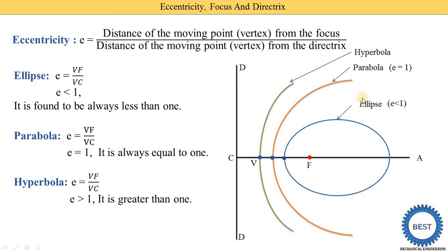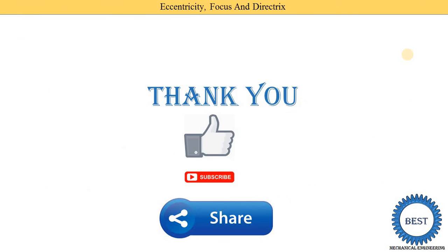You can easily remember this: the 'less than' symbol looks like the letter E, with a horizontal line — so for ellipse, eccentricity is less than 1. For parabola it is equal to 1. For hyperbola it is greater than 1. Thank you for watching this video. If you learned something, please like the video and subscribe to the channel.